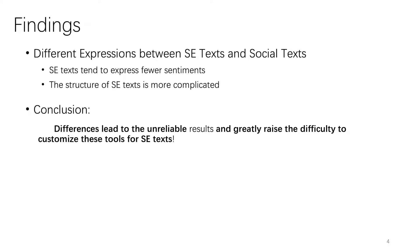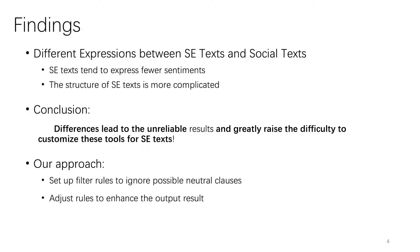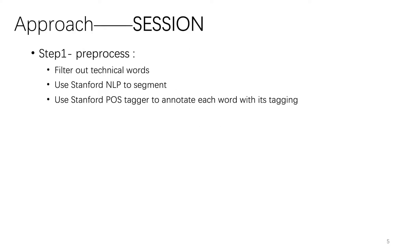The dispersed expression of sentiments requires tools to identify whether the author is expressing sentiments in different parts of an SE text. Hence, the complicated sentence structures in SE texts make it very important to set up filter rules to ignore positive-neutral clauses and adjust rules to enhance the output results. We proposed a three-step approach, called SESTION.